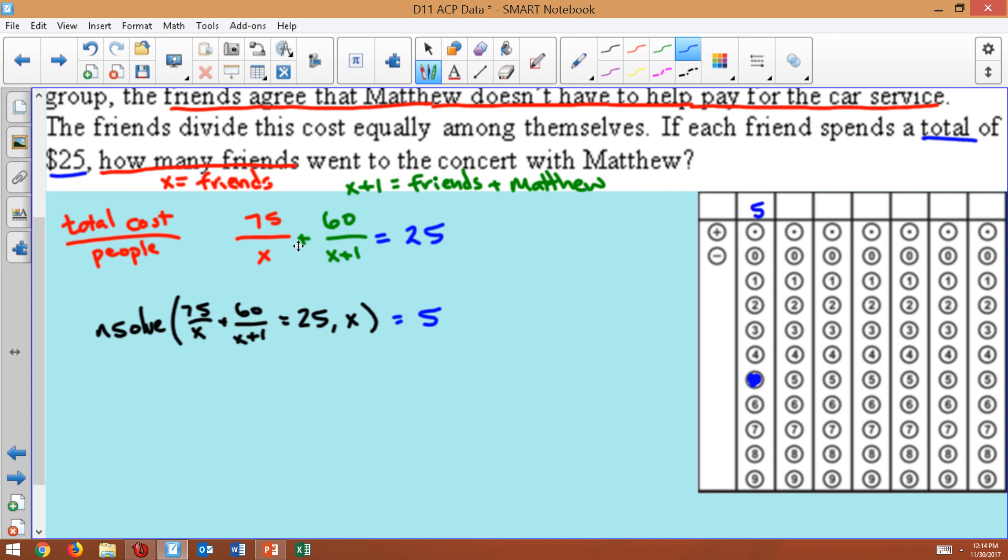One more way you could do it to solve a problem like this is you multiply by the denominators, the factors that are missing. So 75 would get multiplied by X plus one. Or you actually just multiply by every single factor.